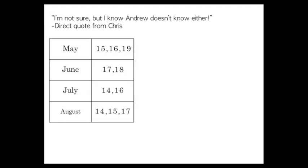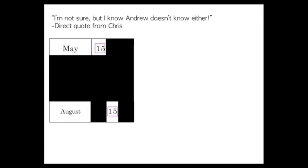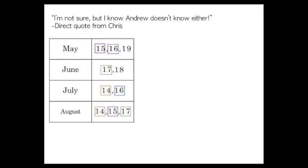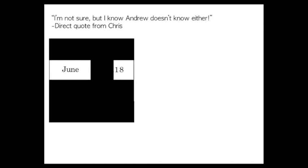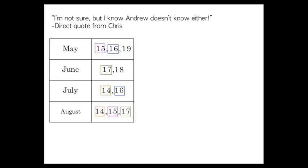So let's focus on the dialogue. It starts with Chris saying, I'm not sure, but I know Andrew doesn't know either. If we look at these possible days, each number has a partner in another month, except for 18 and 19 — those are unique. But if Cheryl whispered 18 in Andrew's ear, then he knows for sure it's June 18th because 18 doesn't line up with any other month. Chris says he knows Andrew doesn't know, and the only way he could possibly know this is if the month wasn't May or June. So we can automatically eliminate May and June.